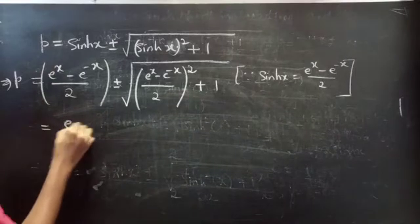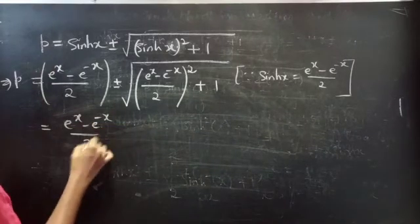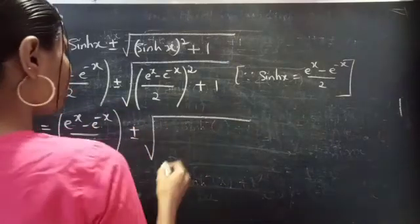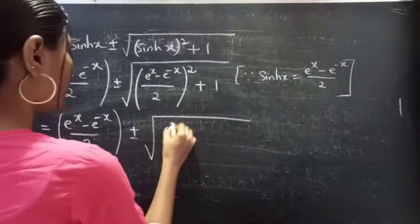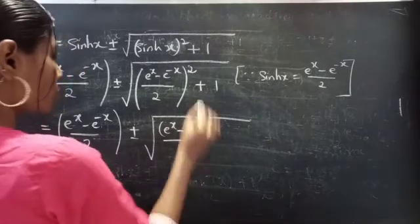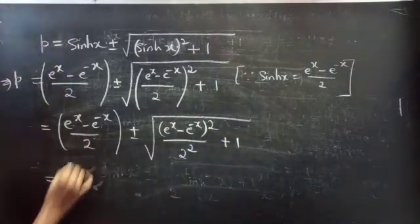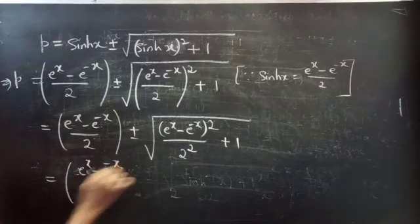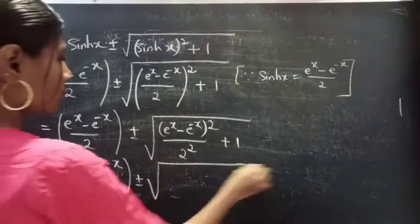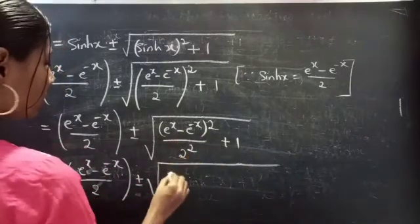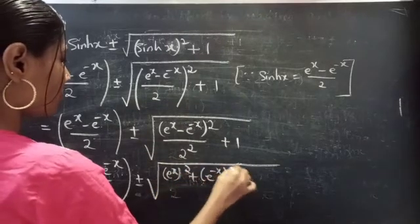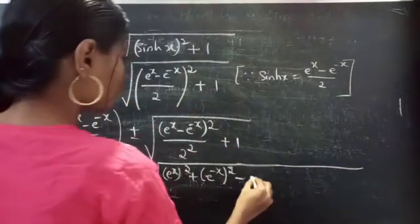This equals (eˣ minus e⁻ˣ)/2 plus or minus square root of (eˣ minus e⁻ˣ)² divided by 2², plus 1. Now expanding (eˣ minus e⁻ˣ)² using (a minus b)² equals a² plus b² minus 2ab.